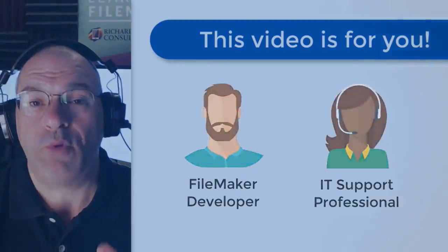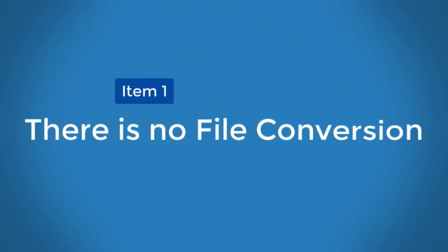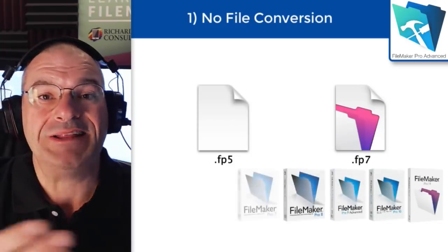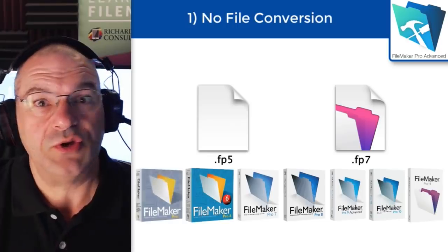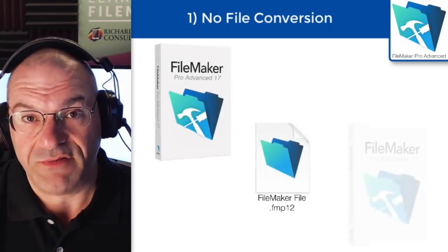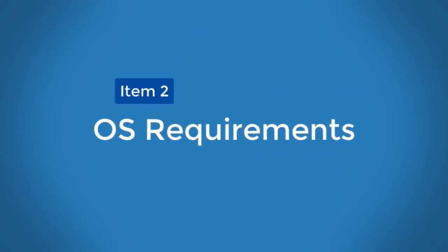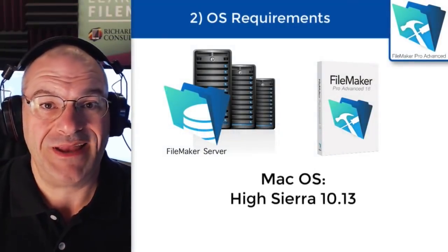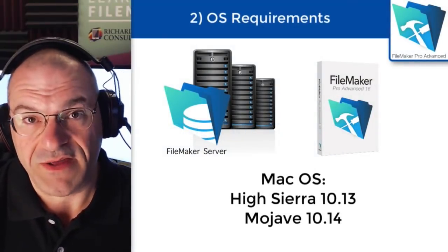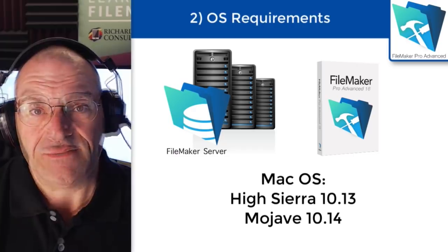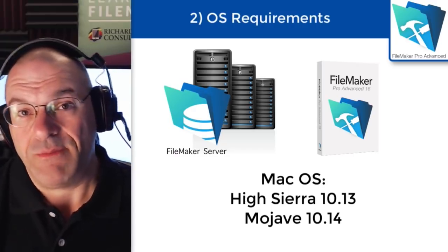First off, it's important to note that with the release of 18, there is no file conversion. Throughout the history of FileMaker, sometimes when you upgrade from one version to the next there's some sort of file conversion, which leads to stress because people have to make sure that the conversion works correctly. So anytime we can get a new version of the FileMaker platform without going through a file conversion, that's a good thing. Keep in mind, if you're deploying FileMaker Server or FileMaker Pro Advanced on a Mac, the supported operating systems are 10.13 High Sierra or 10.14 Mojave. If you're using 10.12, you really need to update before you try to install 18 — that goes for Pro Advanced as well as Server on the Mac platform.